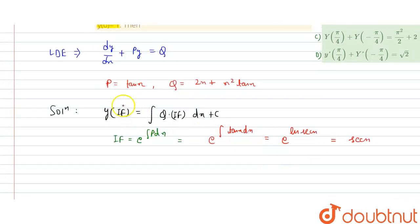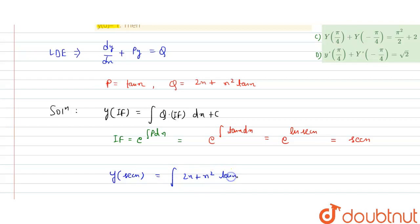Now put this into the equation: y × sec(x) = ∫(2x + x²·tan(x)) × sec(x) dx + C. This is Q times the integrating factor.